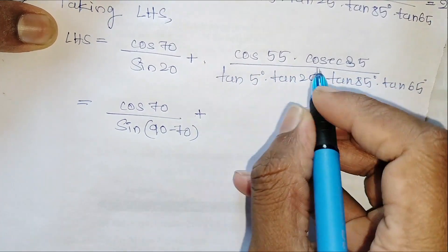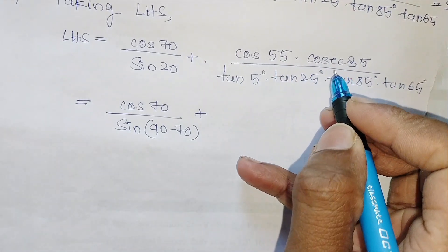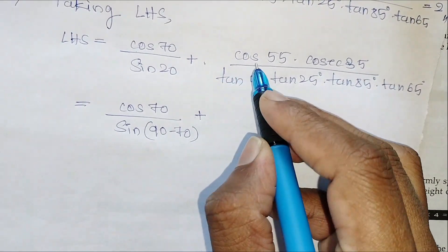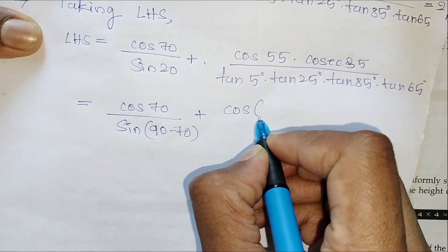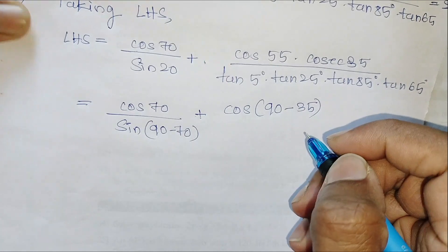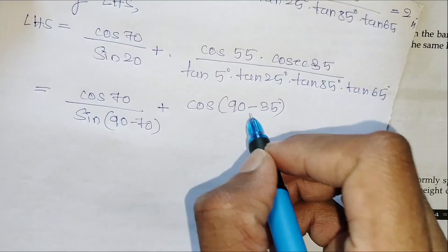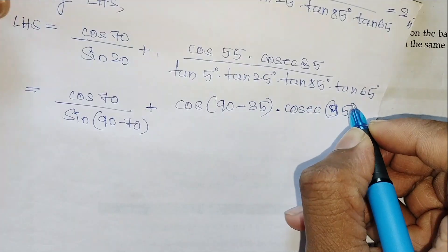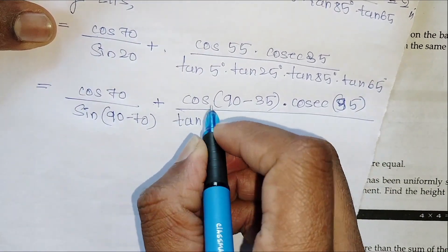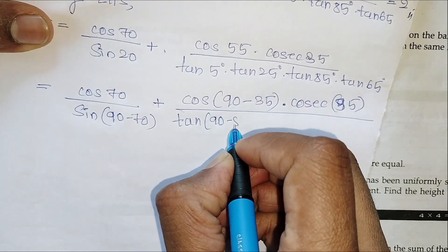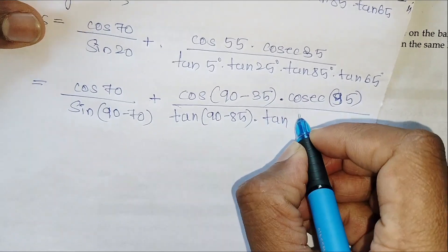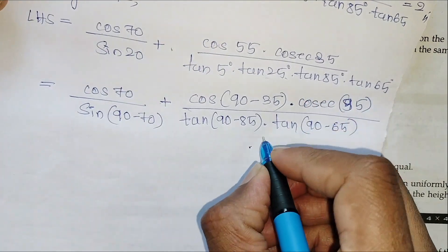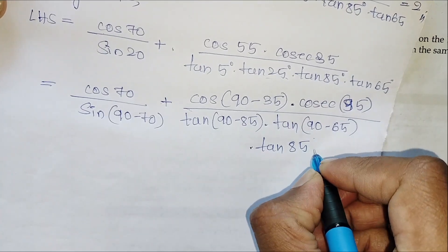Similarly here also, we have cos and cosec functions. We can convert cos 55 as cos of 90 minus 35, which equals sin 35. For tan 5 we replace it as tan of 90 minus 85, and tan 25 as tan of 90 minus 65, leaving tan 85 and tan 65 as they are.